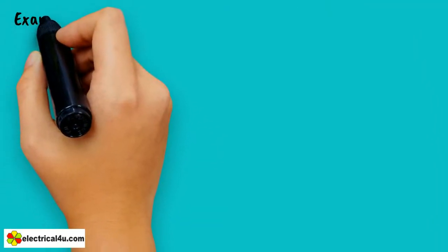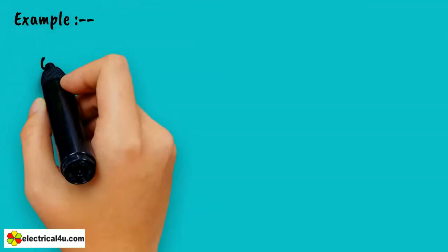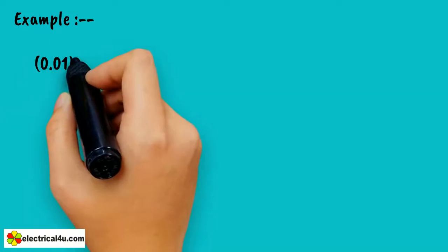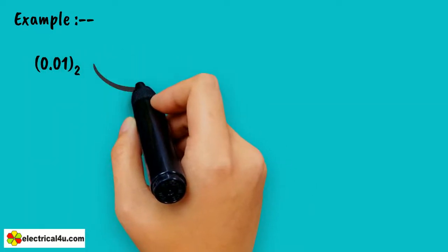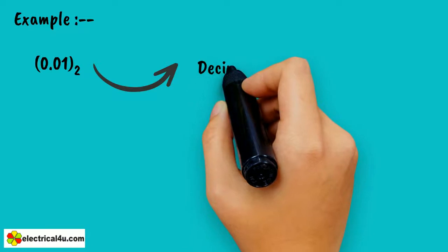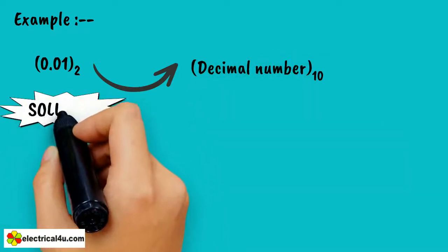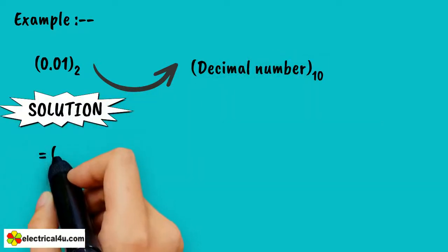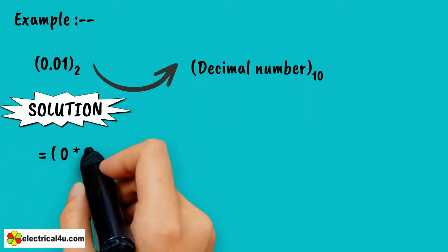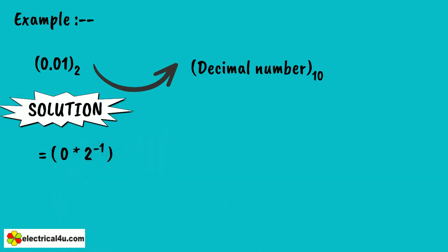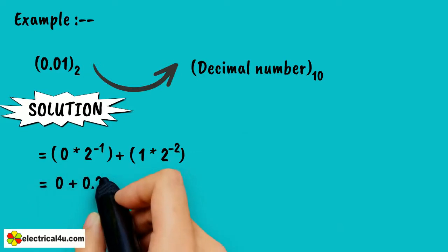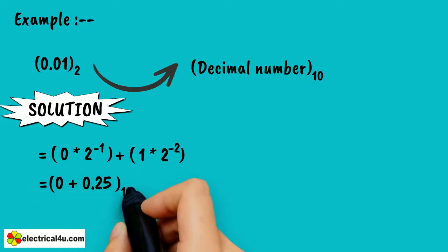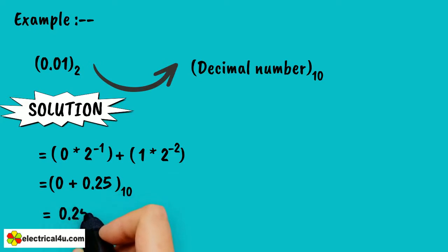Here we will see another example. The binary number 0.01 (base 2) has to be converted to a decimal number (base 10). The solution is: 0 × 2⁻¹ + 1 × 2⁻² = 0 + 0.25 (base 10).